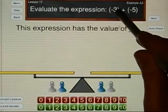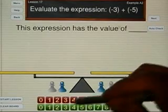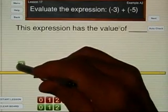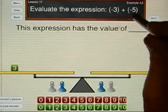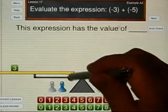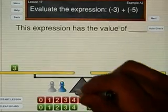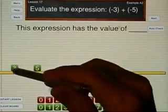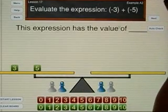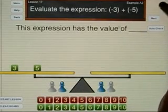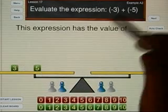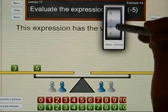Let's go on to the next expression. This one says find the sum of negative 3, that would be a green 3, plus negative 5. So a green 3 and a green 5 is going to have a value of green 8. So the sum of negative 3 and negative 5 will be negative 8.